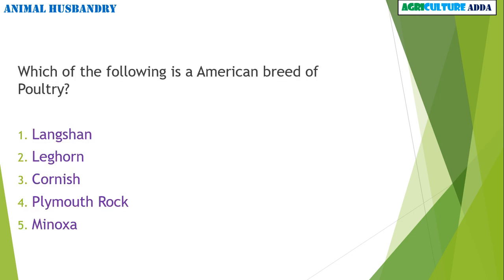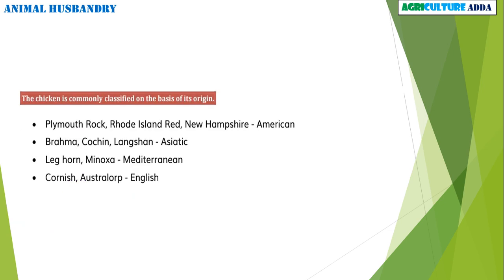Next question: which of the following is an American breed of poultry? In poultry, there are many breeds. The options are: Langshan, Leghorn, Cornish, Plymouth Rock, and Minorca. The answer is Plymouth Rock. Please note the other classifications based on origin.